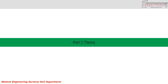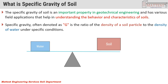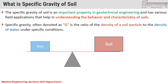The second part of this video is Theory. The specific gravity of soil is an important property in geotechnical engineering with various field applications that help in understanding the behavior and characteristics of soil. Simply put, specific gravity is the ratio of the density of soil particles to the density of water under specific conditions.